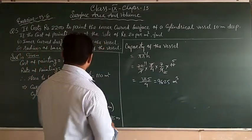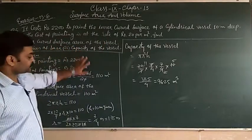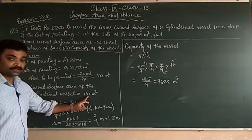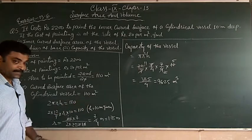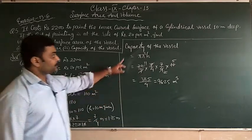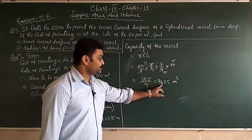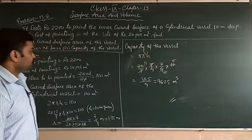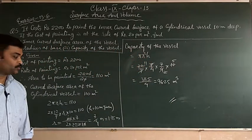So three answers we have found. First one, curved surface area of the cylindrical vessel is 110 meter square. Second, the radius of the base is 1.75 meters. And third, capacity of the vessel is 96.25 meter cube. Clear students? Pause the video to note down.